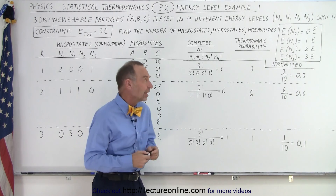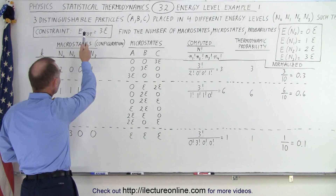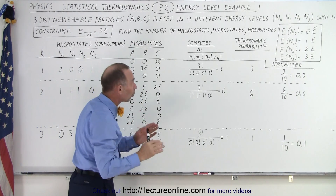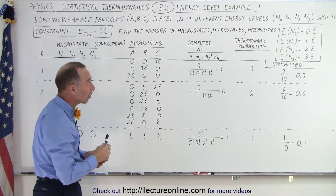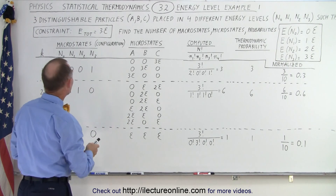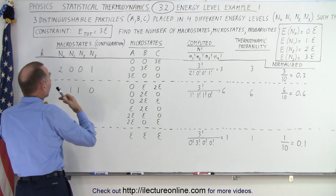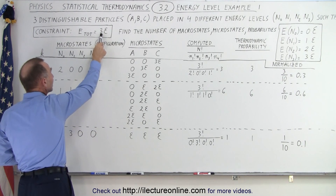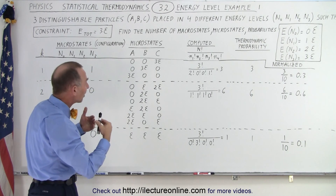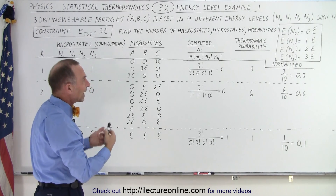So here we have a fairly simplistic example. We have three distinguishable particles, let's call them A, B, and C. They're placed in four different energy levels, let's call them N0, N1, N2, N3, such that the constraint is that the total energy of all three particles together is three times E. The unit E represents a fixed amount, or a quantum of energy.